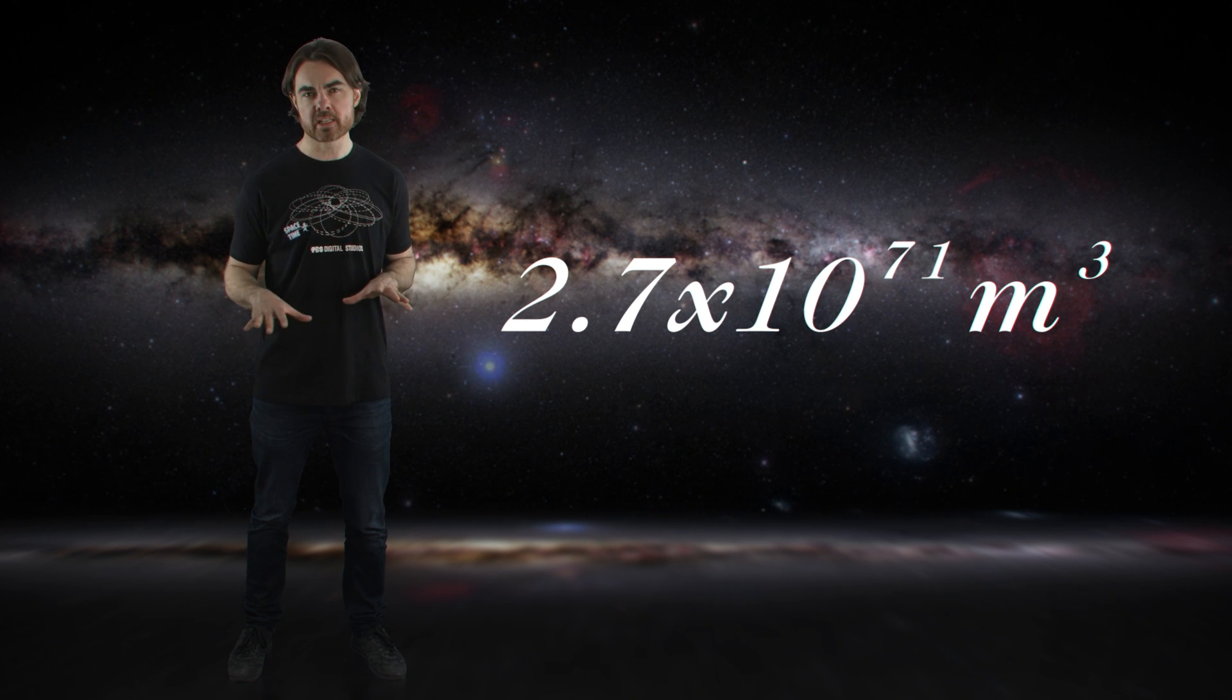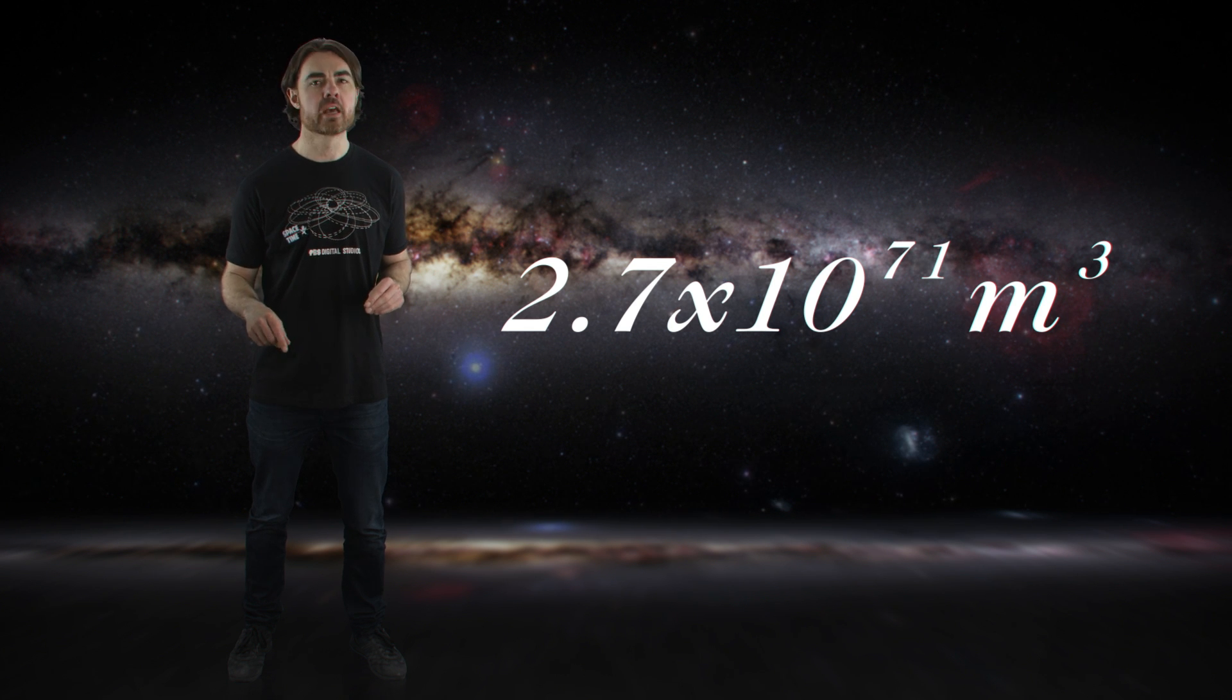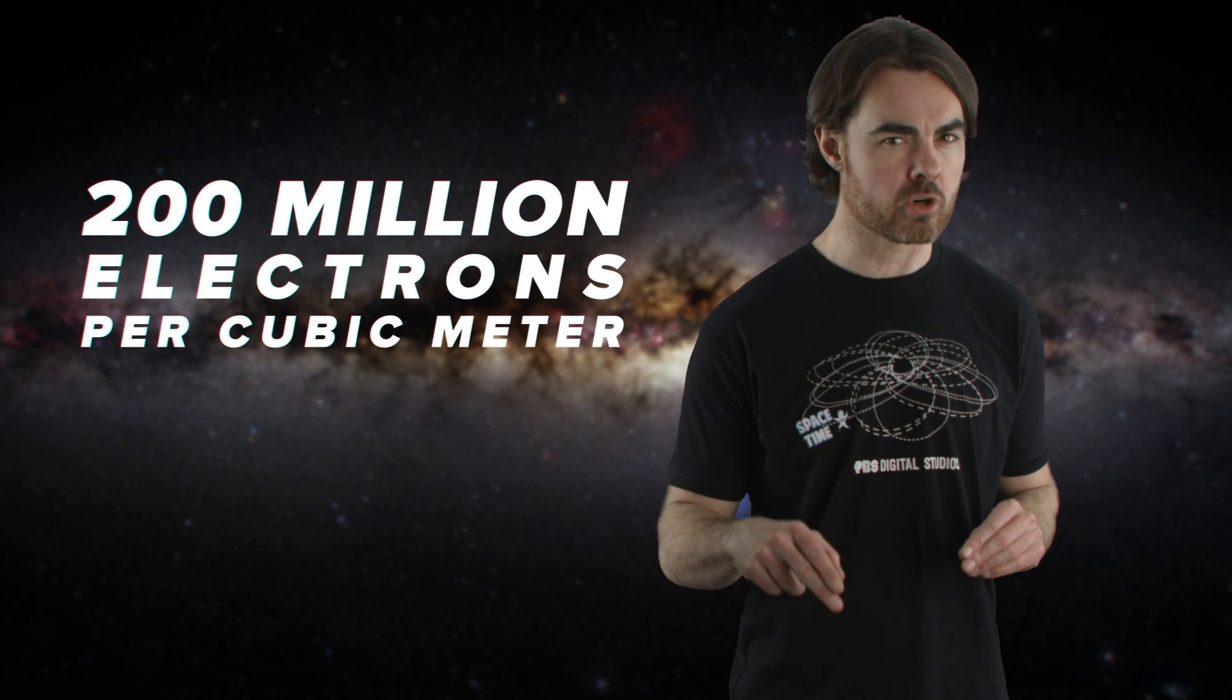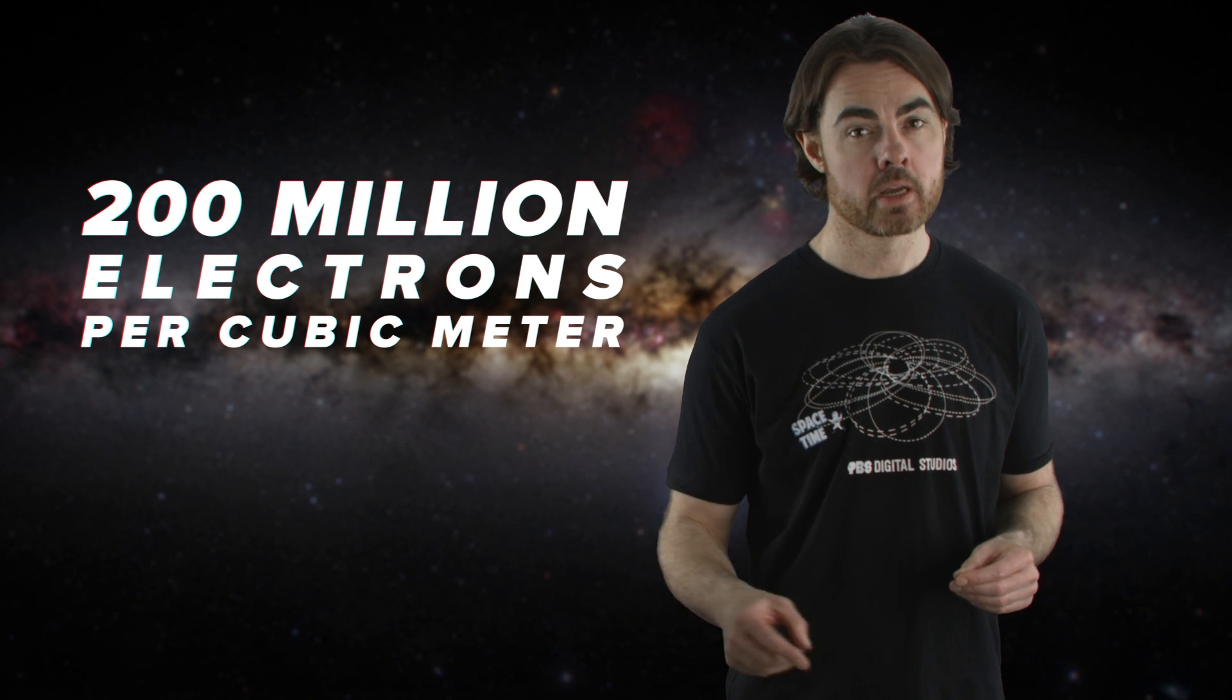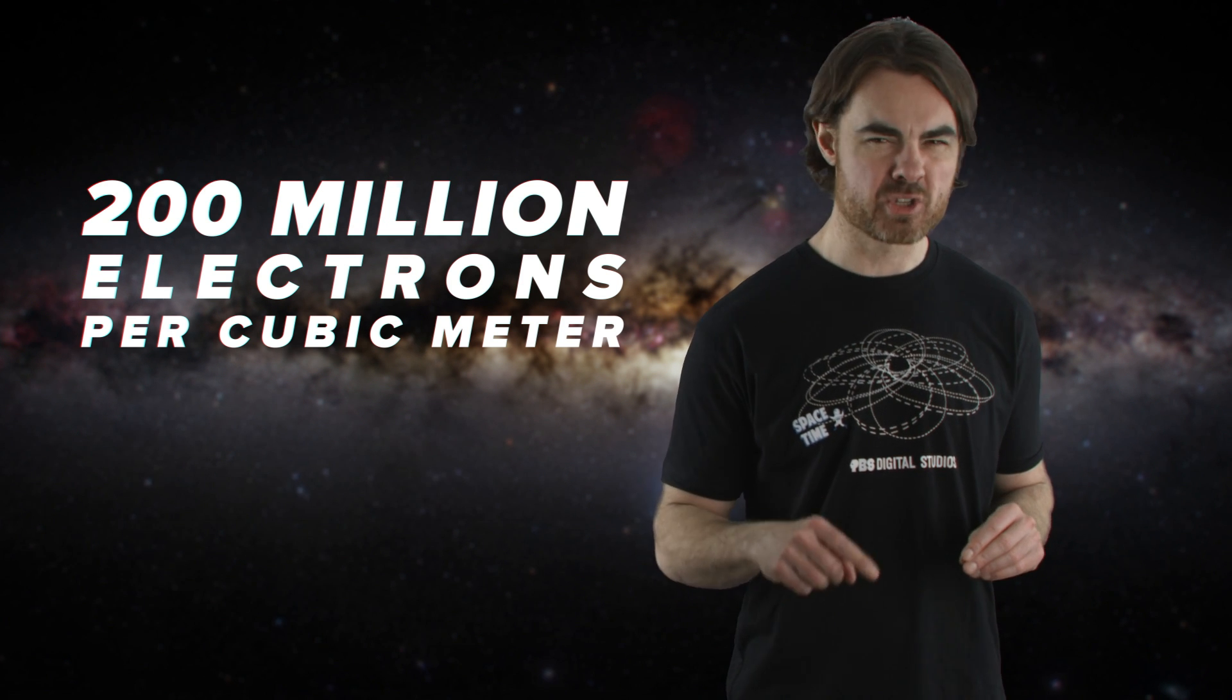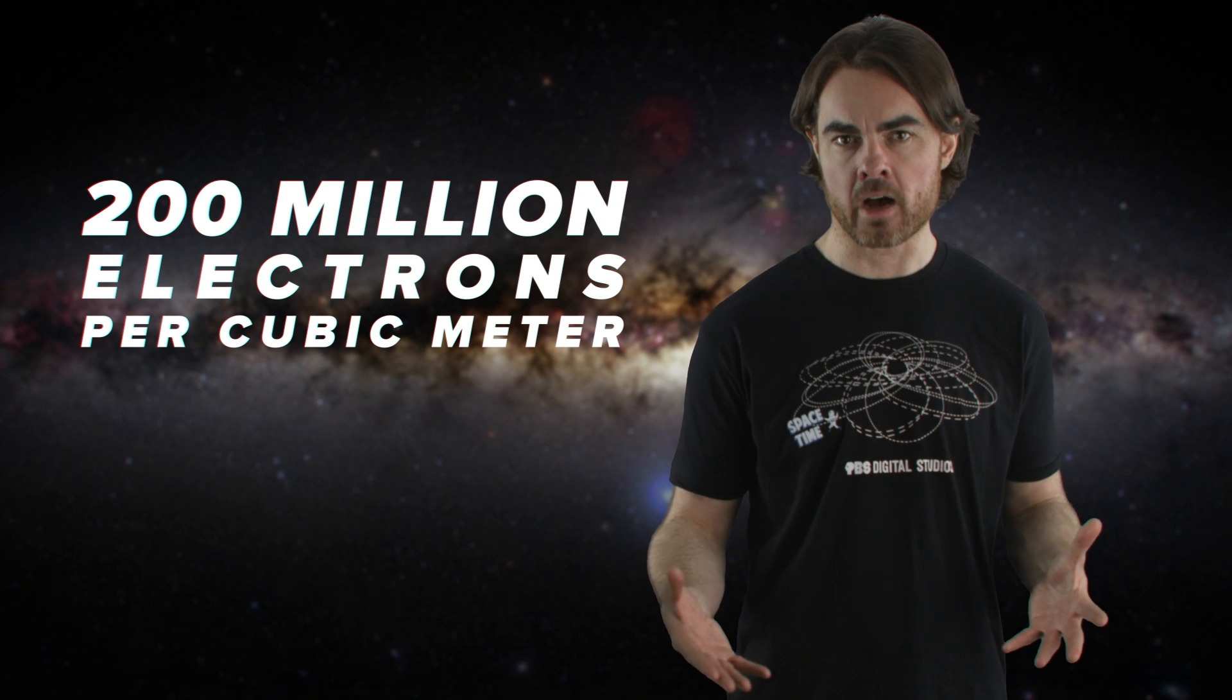translates to 42.3 million light years then, which is a volume of 2.7 times 10 to the 71 cubic meters. Spread that ridiculous number of electrons out evenly, and we get that there were 200 million electrons in every cubic meter at the moment of recombination. That's way up from the 0.2 electrons per cubic meter that we find now.